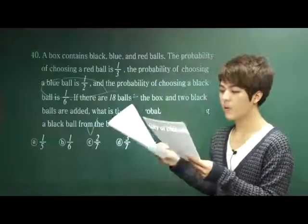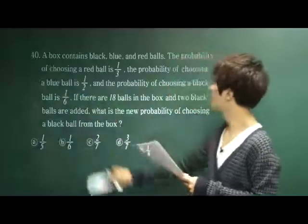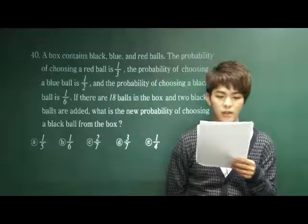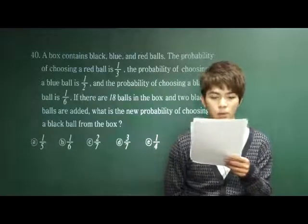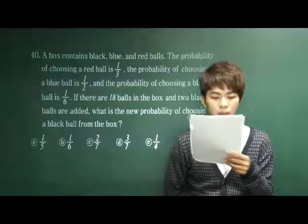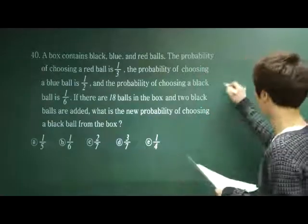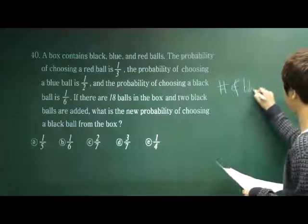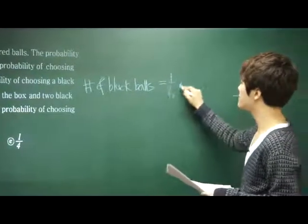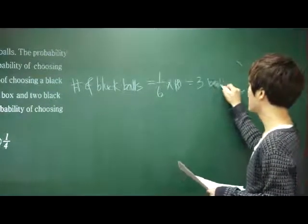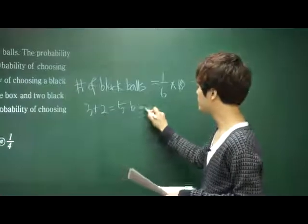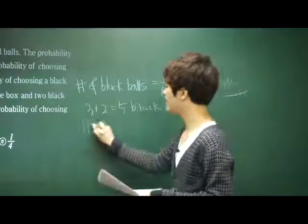Number 40: a box contains black, blue, and red balls. The probability of choosing a red ball is 1/3, and the probability of choosing a black ball is 1/6. There are 18 balls in total, and two black balls are added. What is the new probability of choosing a black ball? First, find the number of black balls: 1/6 × 18 = 3 black balls. Two more are added, so there are now 5 black balls and 20 balls total.